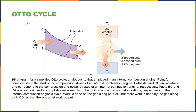The Otto cycle consists of an isochoric heat addition (when the spark fires and pressure rises at constant volume), an adiabatic expansion (the power stroke), an isochoric exhaust, and an adiabatic compression. Sadi Carnot theorized the ideal engine cycle: isothermal expansion while heat goes in, then adiabatic expansion, then isothermal exhaust where heat goes out, then adiabatic compression. He proved mathematically this gives the highest possible efficiency.